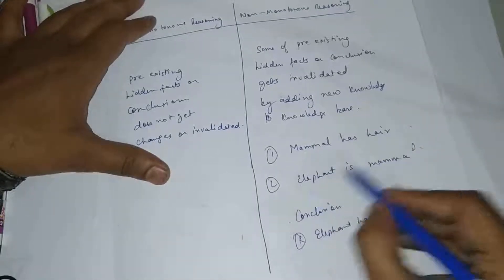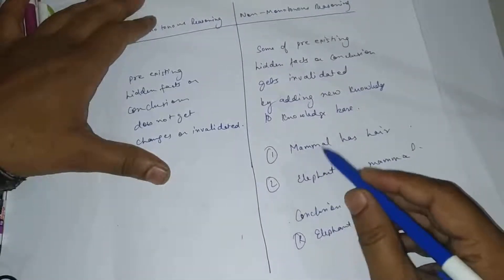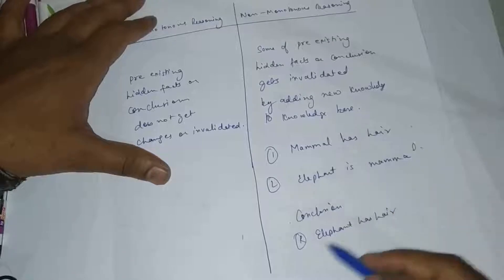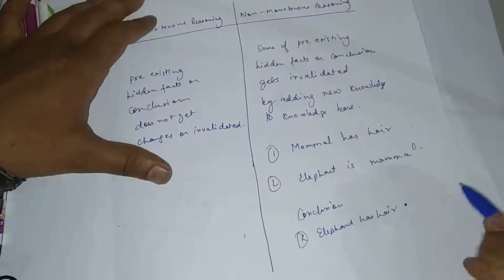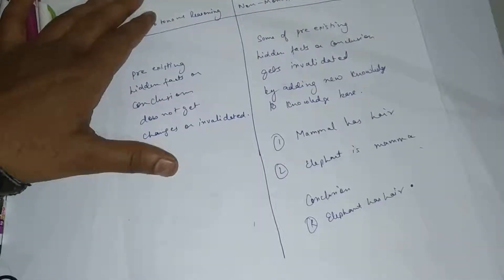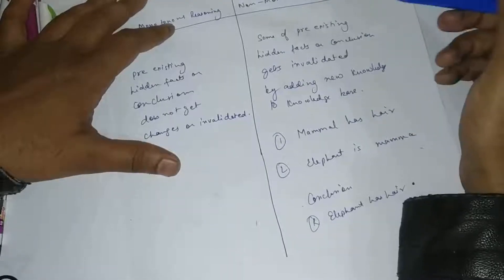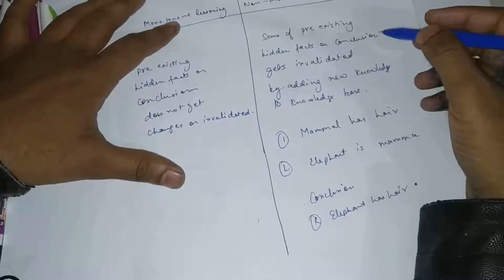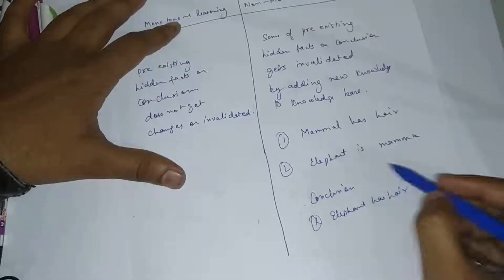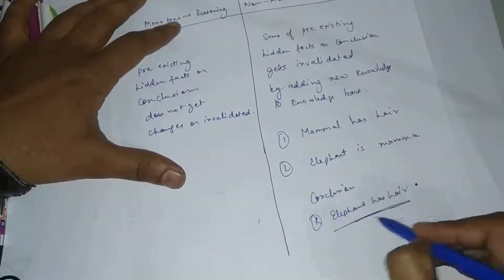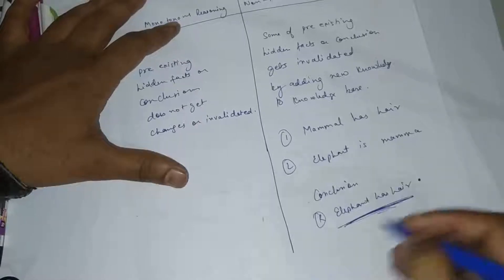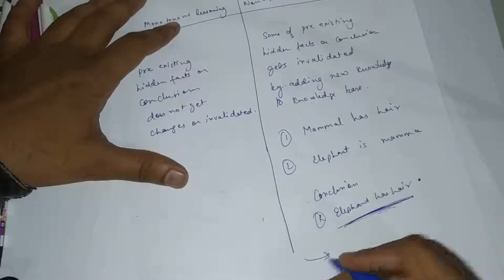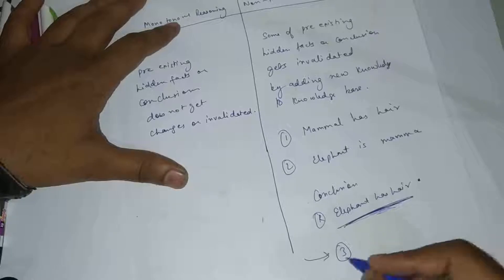So I can make a new fact - the conclusion is that elephant has hair. Now, in non-monotonous reasoning, what is the concept? The concept is that when I add a new fact, I will add a third fact.